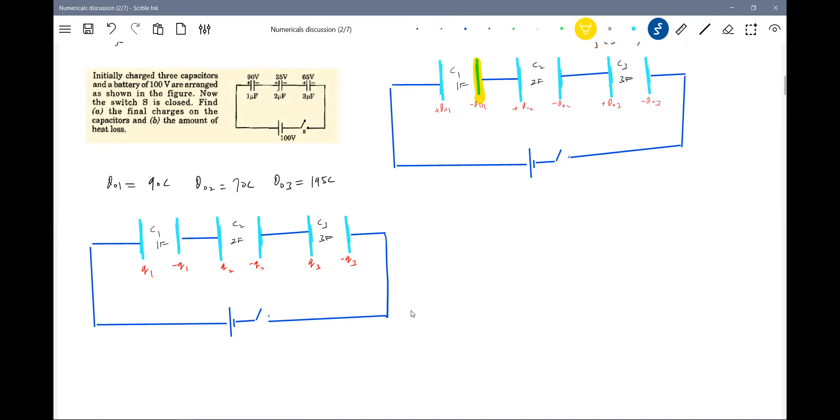So what is the charge of these plates? Minus Q naught plus Q naught. So that should be equal to minus Q1 plus Q2. Similarly, the charge of these plates are conserved.